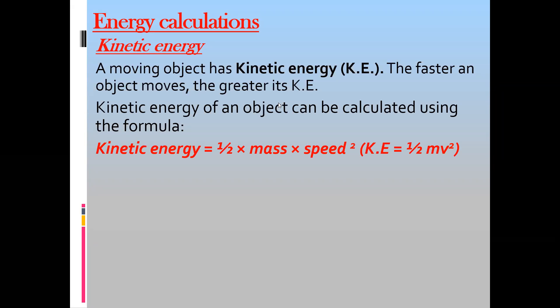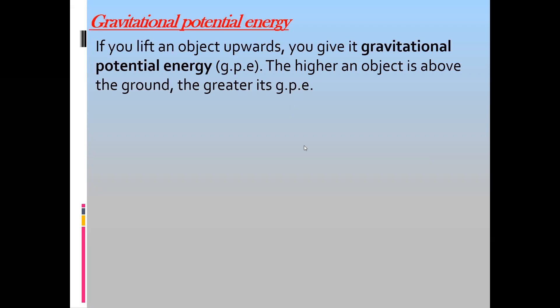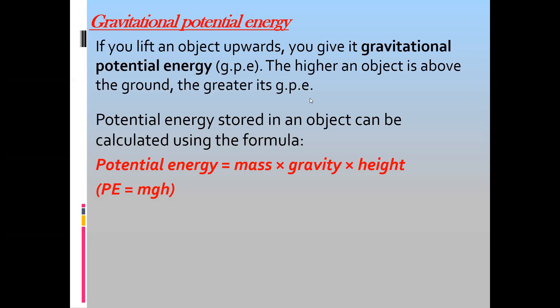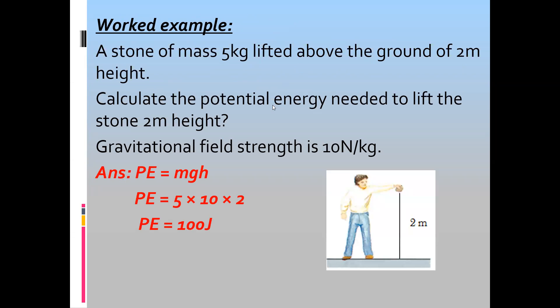For energy calculations: kinetic energy can be calculated using the formula half mv squared, where m is mass and v is the speed or velocity at which the object is moving. For gravitational potential energy, it is mass multiplied by gravity multiplied by height. For example, a five kilogram object lifted to a height of two meters with gravity of 10 gives 100 joules.